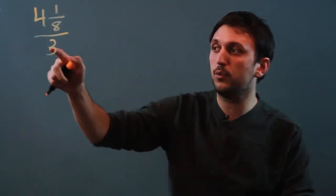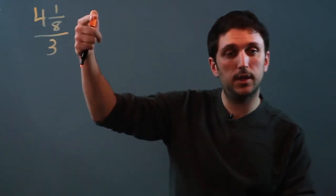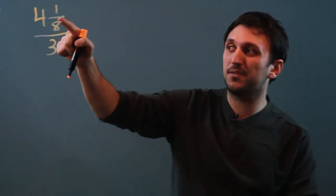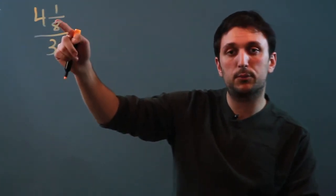The reciprocal method tells us to take this number and flip it and make it its reciprocal and then multiply. Now before we can even do that, we have to take this mixed number and make it a proper fraction.